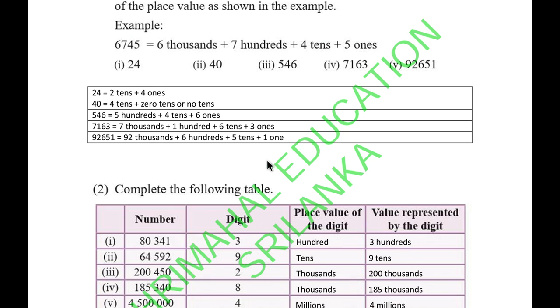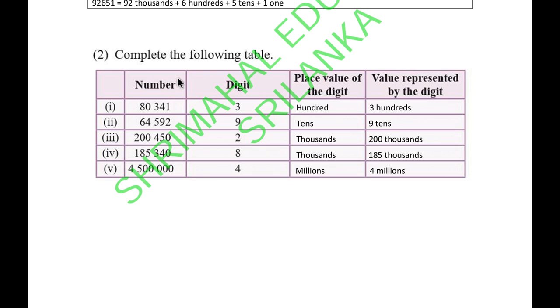Now, complete the following table. They give a table with the number and ask for a special digit. In 80,341, the 3 means it's in the hundreds position, so it represents 3 hundreds. The 9 is in the tens position, representing 9 tens or 90.